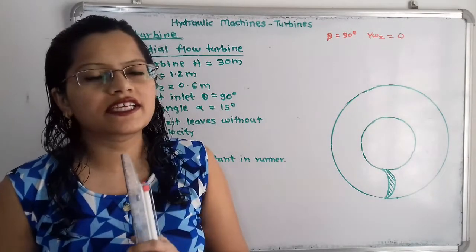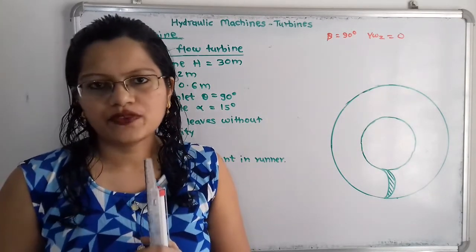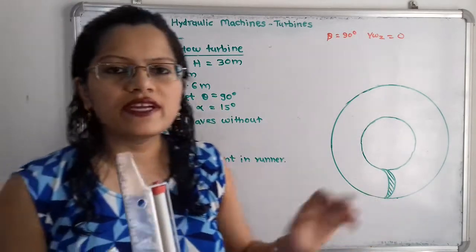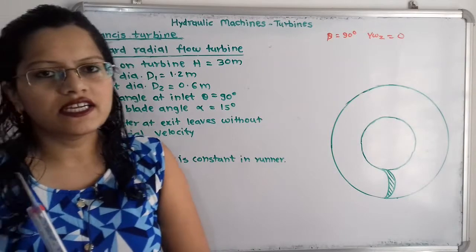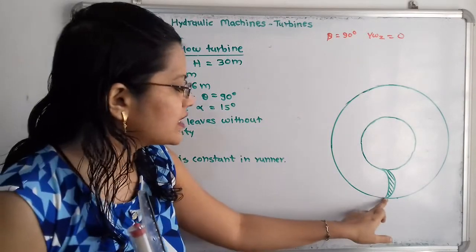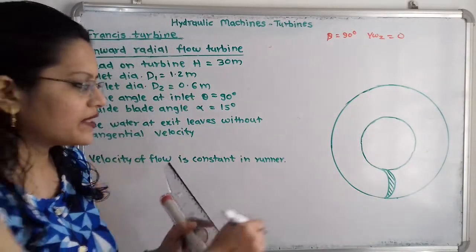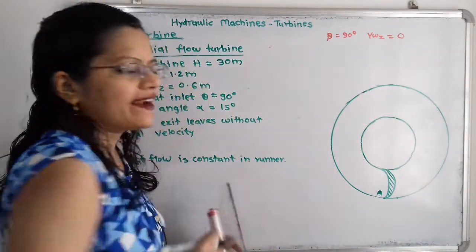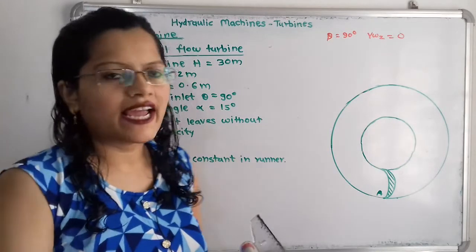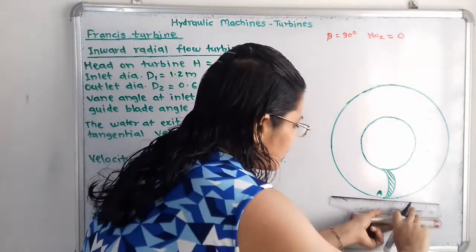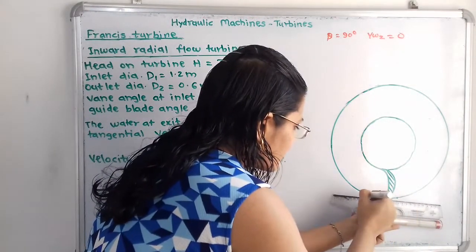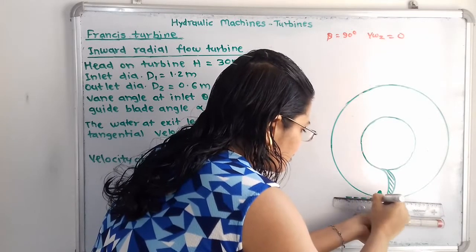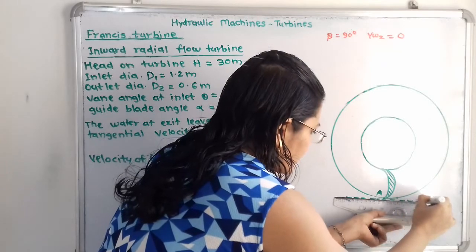The vane angle at inlet, theta, is given as 90 degrees. To draw the velocity diagram at the inlet, we identify the inlet tip on the outer periphery as point A. At point A, we draw a tangent to the circle passing through this point.